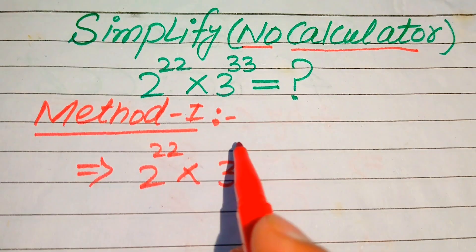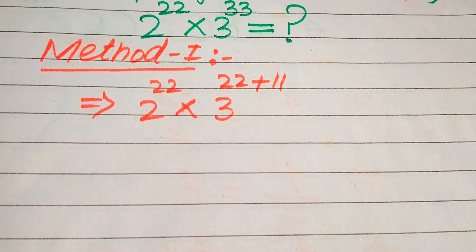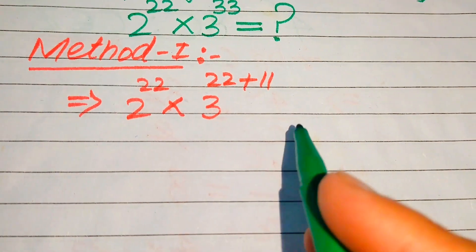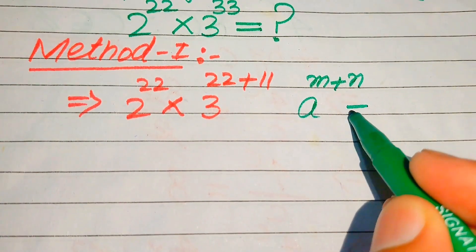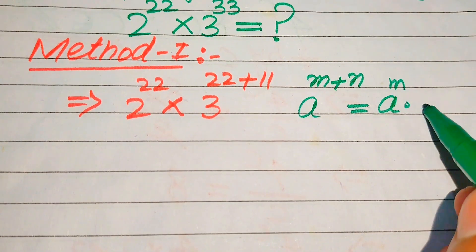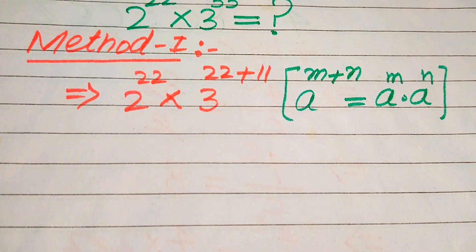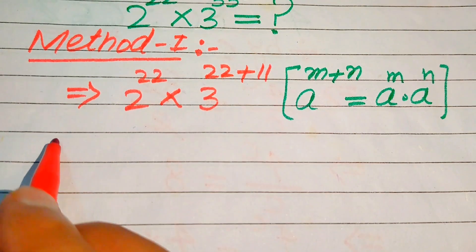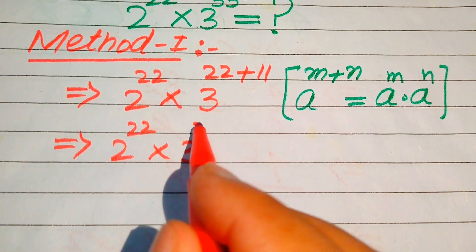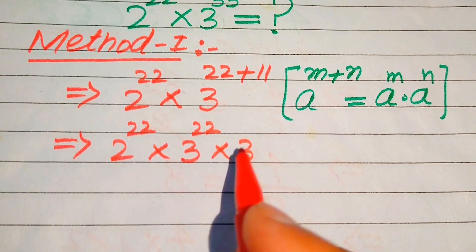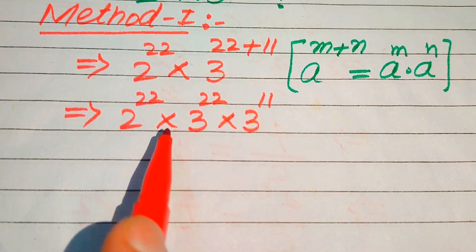We write 33 as 22 plus 11. Now in the next step we use the exponent law: a to the power of m plus n equals a to the power of m multiplied by a to the power of n. According to this exponent law, we break the exponent and it becomes 2 to the power of 22 multiplied by 3 to the power of 22 multiplied by 3 to the power of 11. Now you can see the exponents of these two terms are the same.